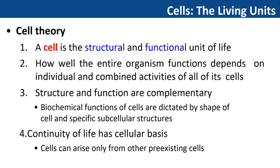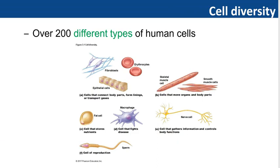The fourth and the last cell theory says continuity of life has a cellular basis. It means cells can arise only from other pre-existing cells. As I mentioned before, the smallest unit of life is the cell. The human body is composed of cells. In fact, there are trillions of cells in the human body. The many different kinds of cells compose the body, and each type is specialized to perform specific functions.